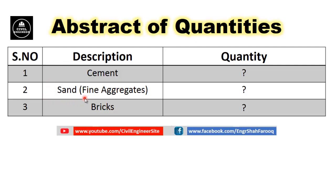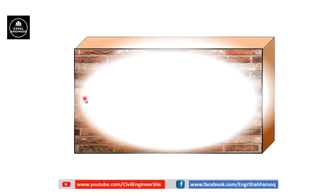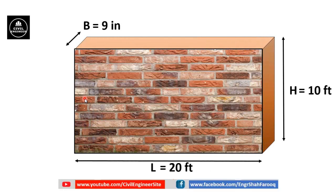Let's start today's discussion. To learn calculating materials required for a given masonry wall, we have selected an example of a brick masonry wall having length 20 feet, height 10 feet, and thickness or width 9 inches.